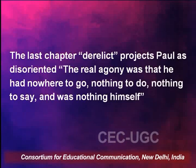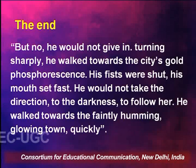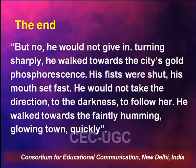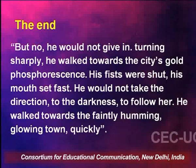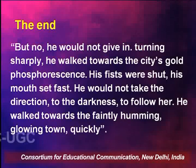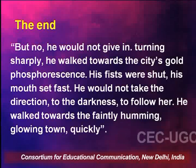But towards the end, let me tell you how the novel ends. The chapter 'Derelict': 'The real agony was that he had nowhere to go, nothing to do, nothing to say, and was nothing himself.' And finally, the last bit — the end: 'But no, he would not give in. Turning sharply, he walked towards the city's gold phosphorescence. His fists were shut, his mouth set fast. He would not take the direction to the darkness to follow her. He walked towards the faintly humming, glowing town quickly.' This is an ambiguous kind of an ending.